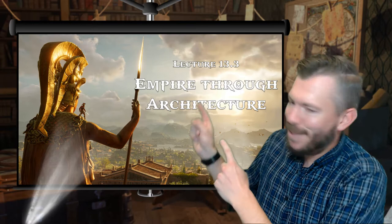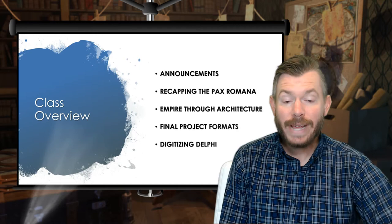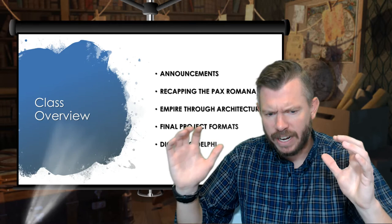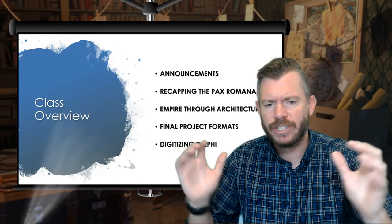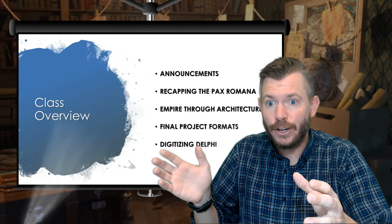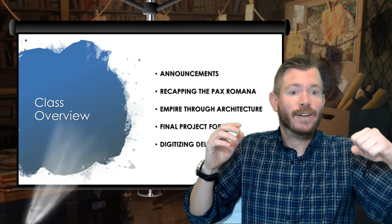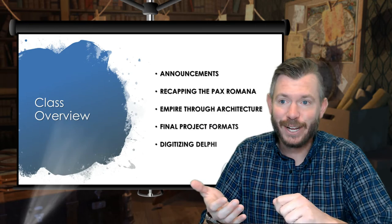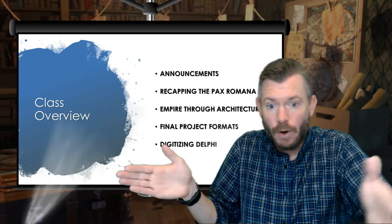We are going to start with a few announcements, then recap the Pax Romana — the Roman peace — that period from the start of Augustus until just around 200 CE, about 200 years. What we're going to cover is the development of several monuments in the city of Rome. If you've got it in your future to go to Italy for study abroad or just travel there, take notes. Put all of these things on your list to go see — you can literally trace the history of Roman civilization within the city of Rome itself through this architecture.